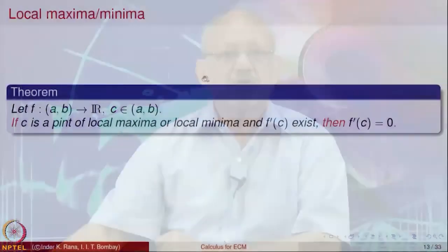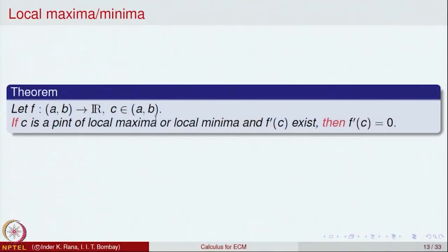In the previous lecture we had started looking at local maxima and local minima of functions at a point. We defined the notion of local maxima and local minima and proved a theorem which gives a necessary condition: if f is a function on an interval (a, b) to R and c is a point in (a, b), and if c is a point of local maxima or minima and the derivative exists, then f'(c) = 0.